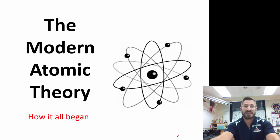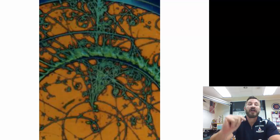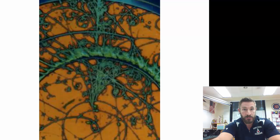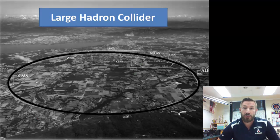Today we're going to learn about the modern atomic theory and how it all began. Do you have any idea what this photograph is of? This is actually a photograph of atoms, a drawing depicting the pathway of atoms taken at CERN.